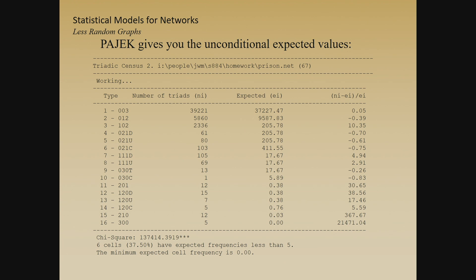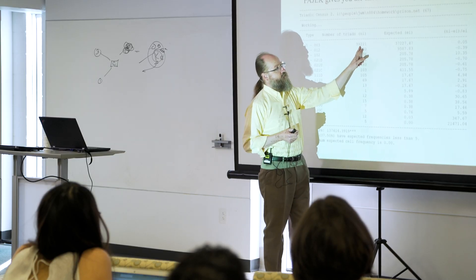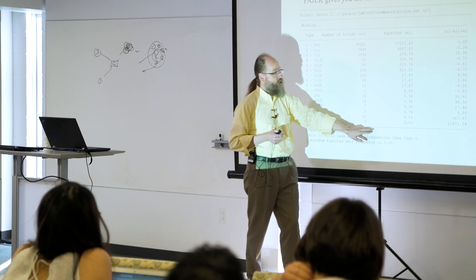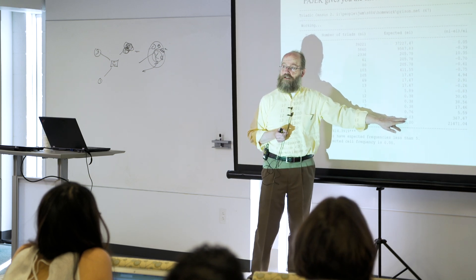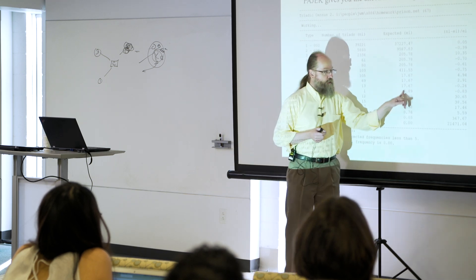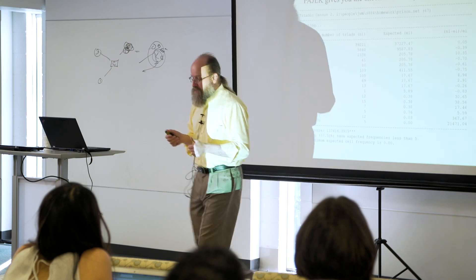One way to think about the random graph is the simple coin flip, and a lot of software does this because it's easy. Looking at an observed triad census — those 16 triads — if I just flip a coin, instead of observing 39,000 of one type, I should have seen 37,000; instead of 12 of another, I should have seen 0.03. You see many more dense triads than expected by chance. But just flipping the coin is a bad model.